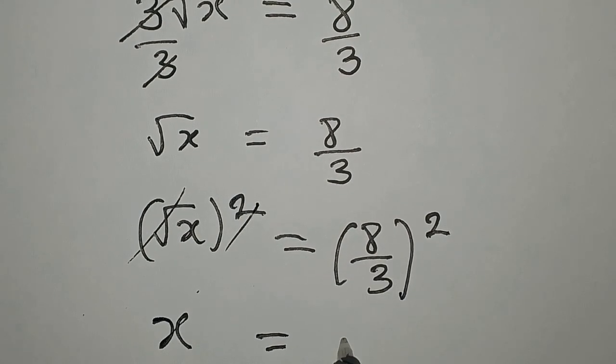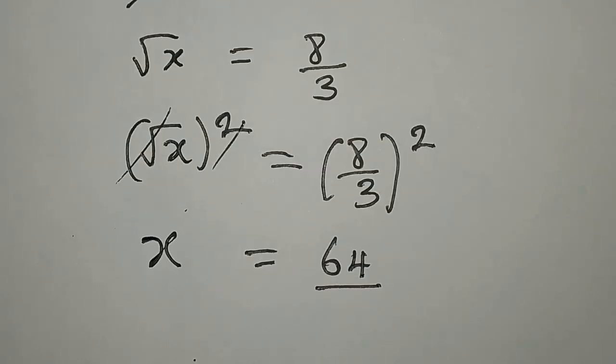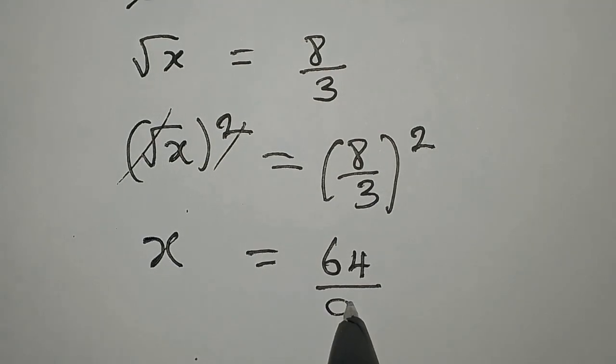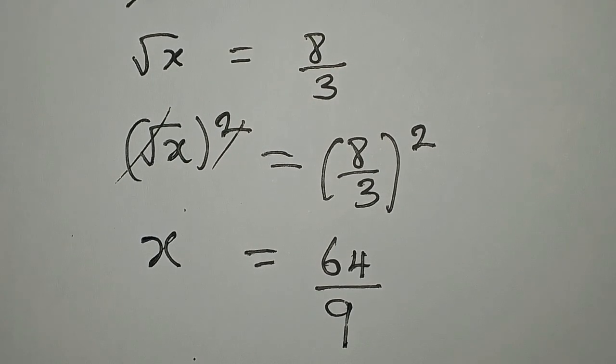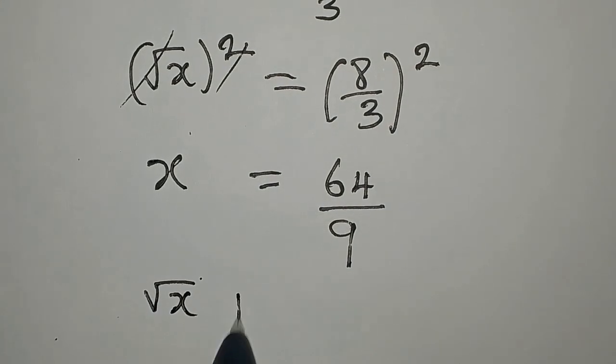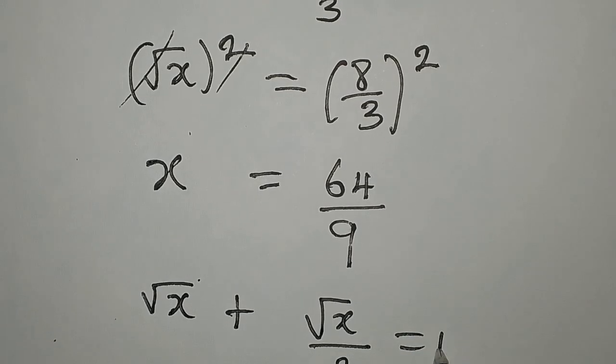X is equal to 8 squared is 64 and 3 squared is 9. So this is the value of x that should satisfy √x plus √x over 2 equals 4.